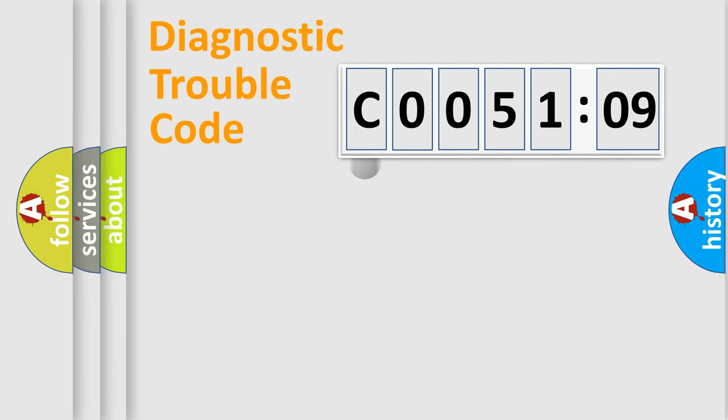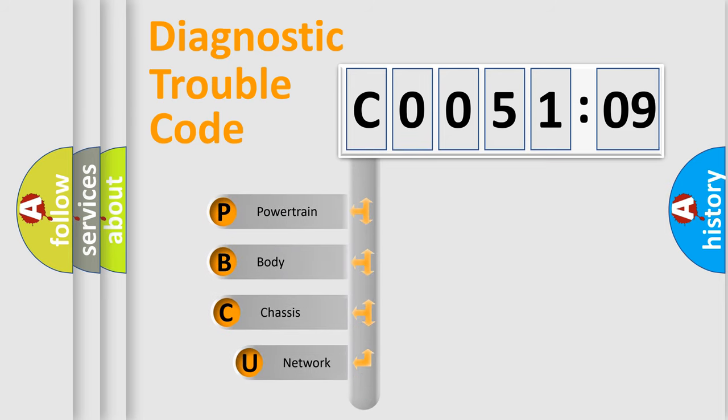First, let's look at the history of diagnostic fault code composition according to the OBD2 protocol, which is unified for all automakers since 2000. We divide the electric system of automobile into four basic units.